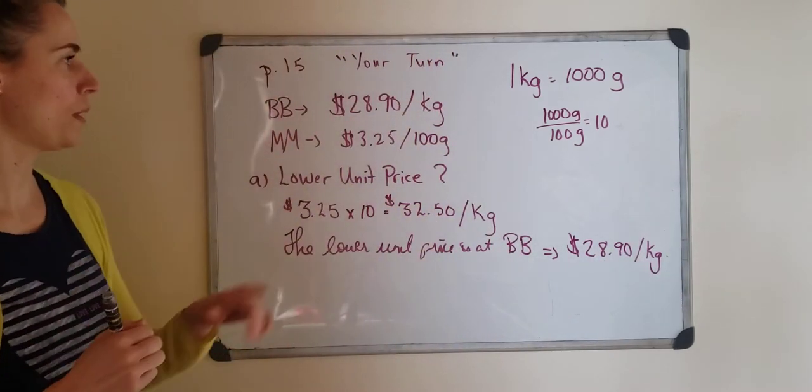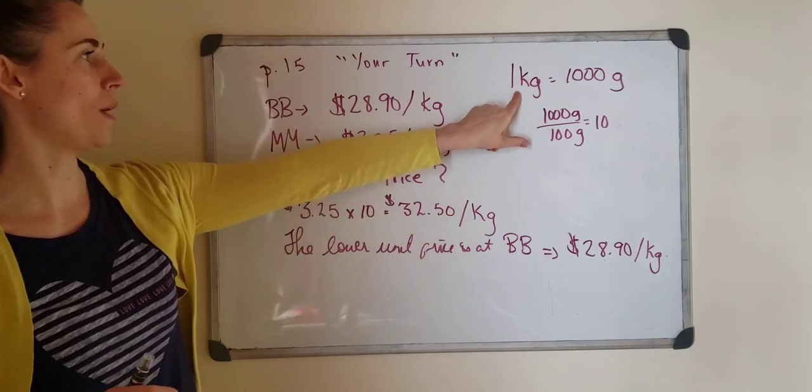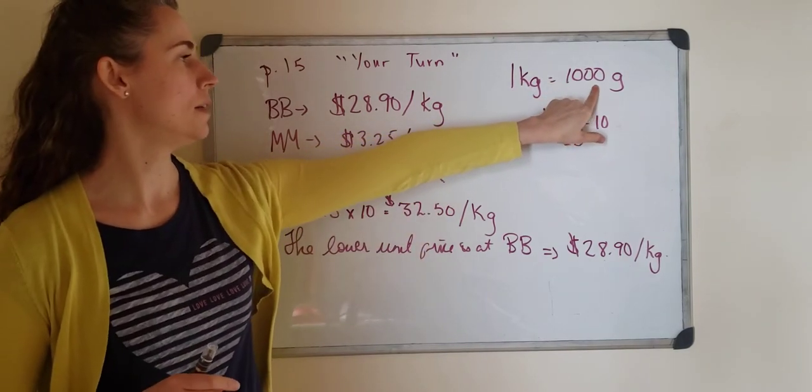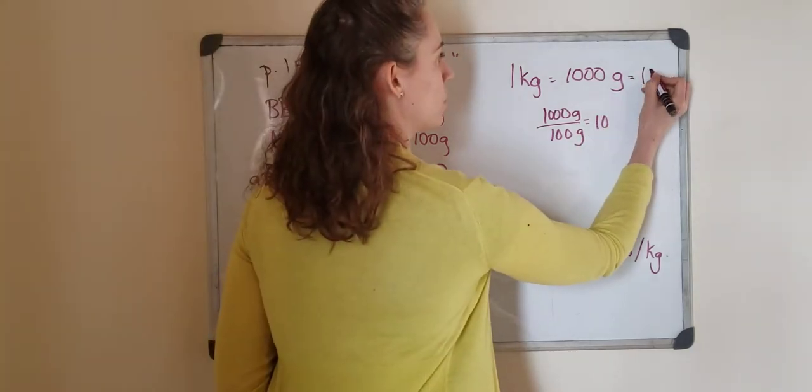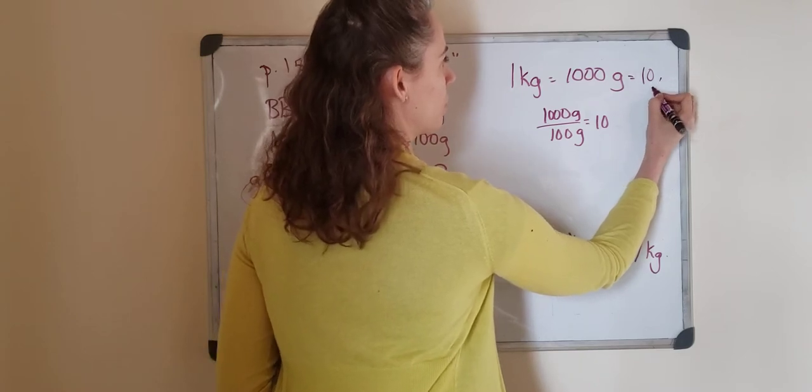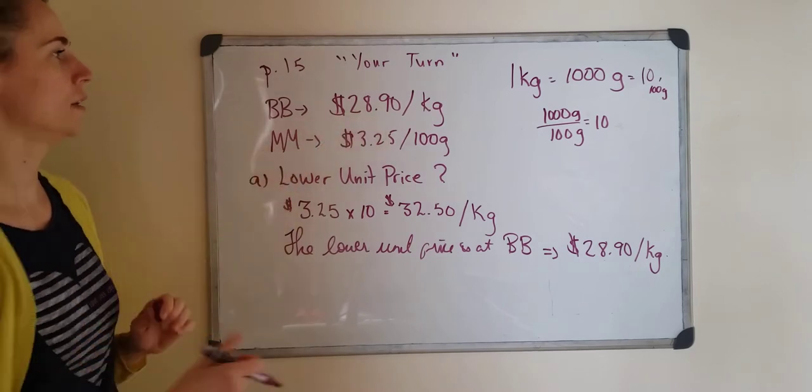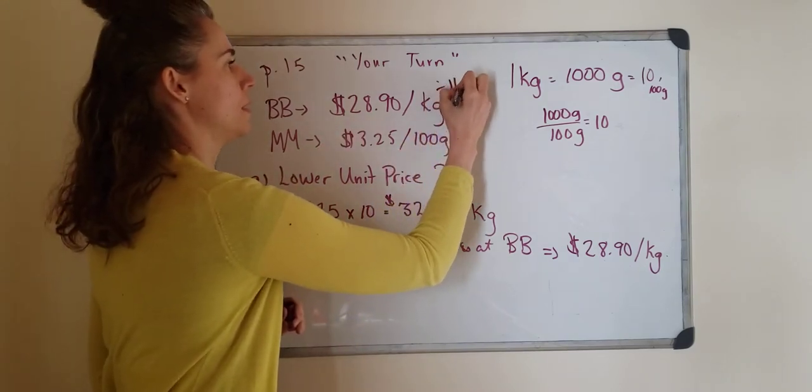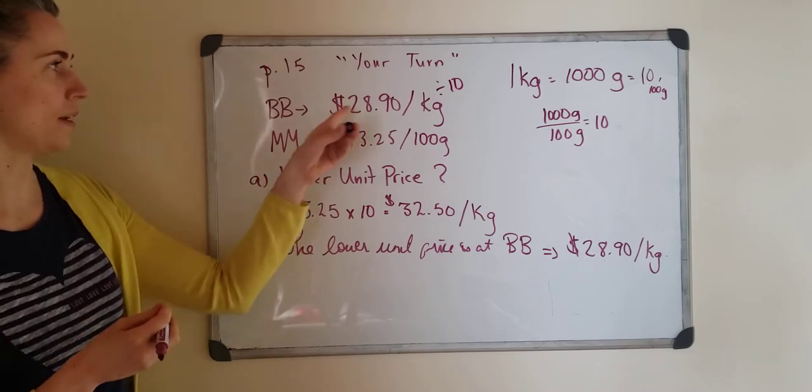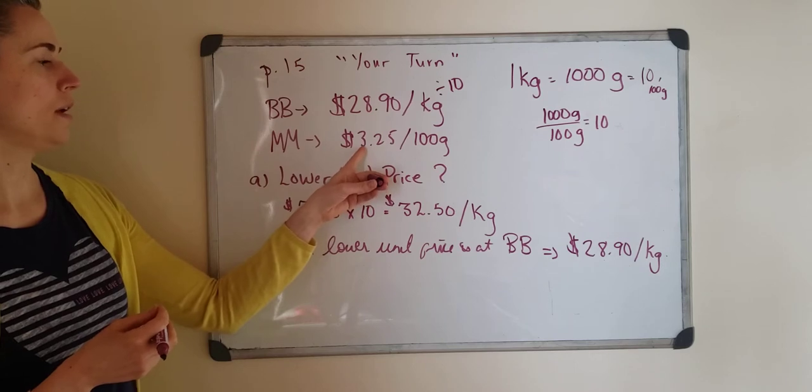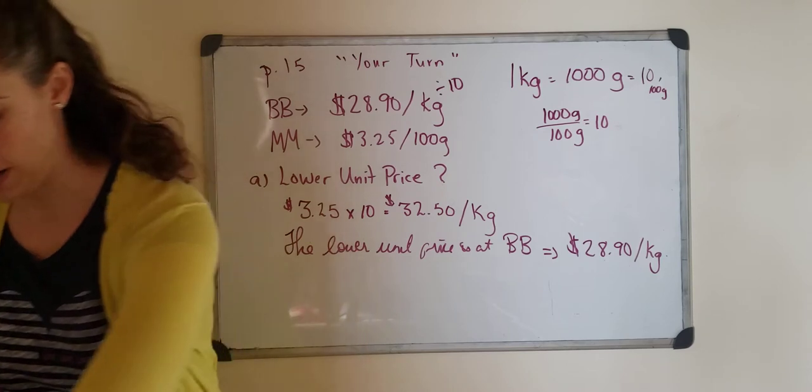I'm not going to go through it but if I wanted to change this into 100 grams, we know that one kilogram has a thousand grams and also equals ten groups of 100 grams. So what I would do is divide that by ten and I would have got $2.89. You'd see that again $2.89 is also lower than the $3.25 per 100 grams. Either way will work. That's our answer for A.